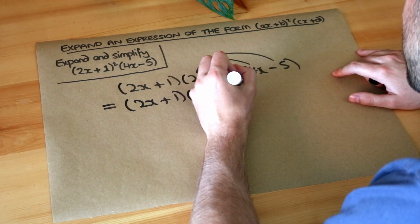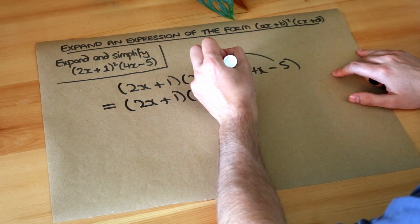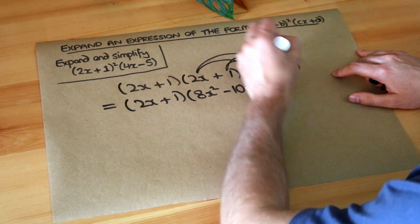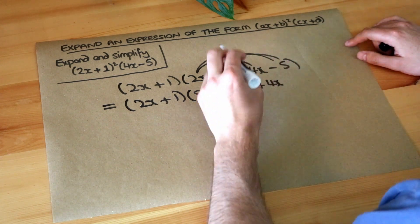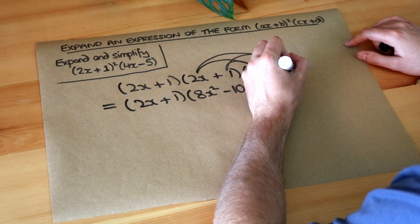And then we do the second thing in that bracket times by each of the things here. So we do 1 times 4x which is plus 4x and we do 1 times minus 5 which is minus 5.